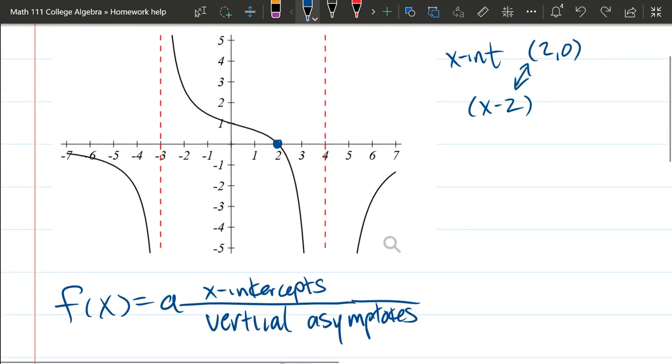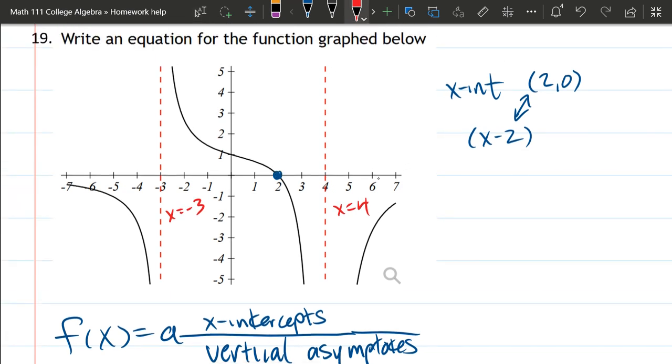Alright, vertical asymptotes. We've got two of those. I'll go to red here. We've got x equals negative 3, x equals 4. And we'll write them here. Vertical asymptotes. So we've got x equals negative 3.